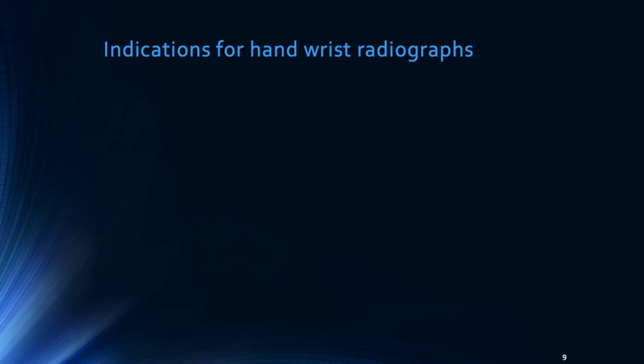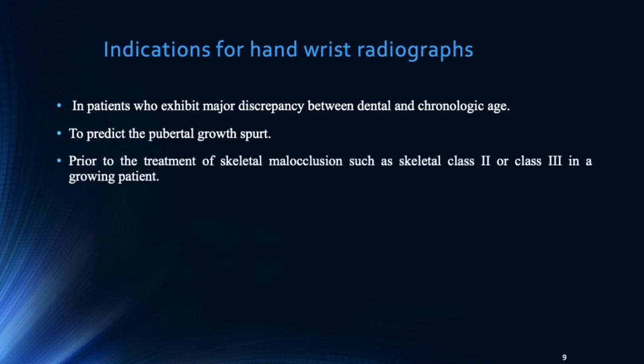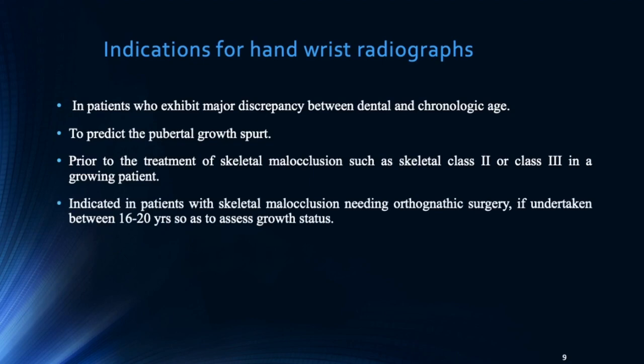When coming to the indications for the hand wrist radiograph: one is patients who exhibit a major discrepancy between dental and chronological age; the next is the need to predict the pubertal growth spurt; and the next is prior to the treatment of skeletal malocclusion such as skeletal Class II or Class III in a growing patient, as we have seen in the previous pictures and discussion.